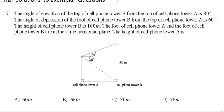The angle of depression of the foot of cell phone tower B from the top of cell phone tower A is 60 degrees. The height of cell phone tower B is 100 meters.